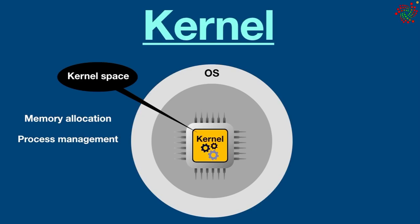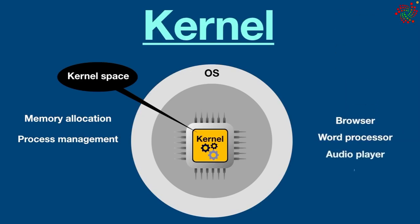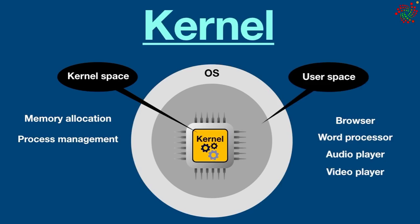Other programs such as browsers, word processors, and audio and video players use a separate memory space known as user space. This is the place where users are given some memory to do their own activities — in simple terms, where application software is executed. Due to these two separate spaces, user data and kernel data do not interfere with each other and do not cause any instability or slowness.